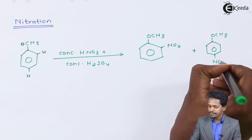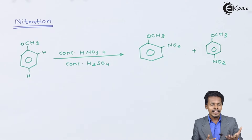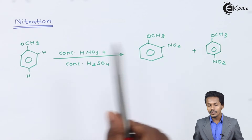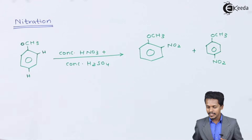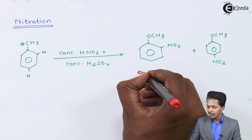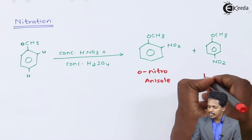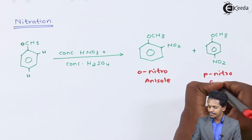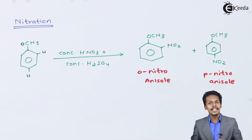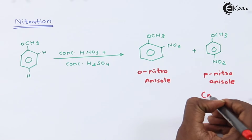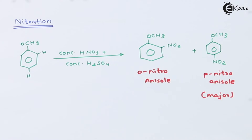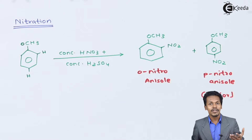The byproduct in both cases is water. The mixture of products obtained from the nitration of anisole are ortho-nitroanisole and para-nitroanisole. The major product is para-nitroanisole, while ortho-nitroanisole is the minor product.